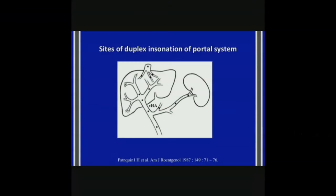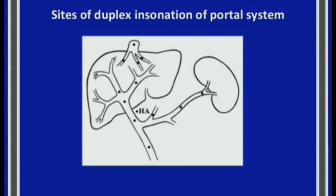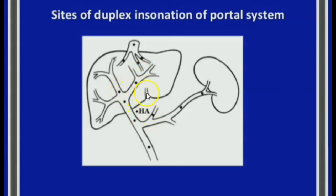Hey everybody, Henry here. We're going to go over portal vein Doppler ultrasound — the protocol and some pathological findings. These are the sites that you want to Doppler: IVC, hepatic veins, main portal vein, right and left portal vein, hepatic artery, and splenic vein.